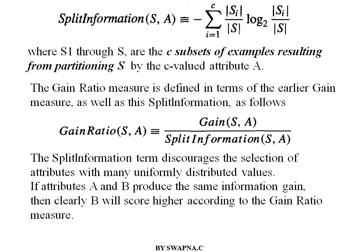The gain ratio measure is what we use to select a particular attribute instead of information gain. After calculating the split information, we calculate the gain ratio, which is defined as: Gain(S, A) divided by SplitInformation(S, A). Gain(S, A) is the information gain statistical property used previously. Si or small S represents the subset of examples satisfying the possible value of the attribute, and capital A is the attribute.